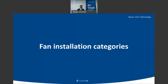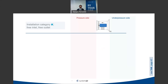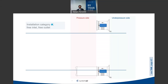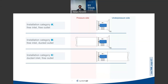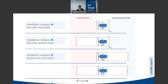First, installation categories. As most of you probably know, in the ISO 5801 and 210 standards, four installation categories are described: Category A — free inlet, free outlet; Category B — free inlet, ducted outlet; Category C — free outlet, ducted inlet; and Category D — ducted inlet and ducted outlet. It is also recommended in the standards to test the fan in the installation category closest to its future usage.